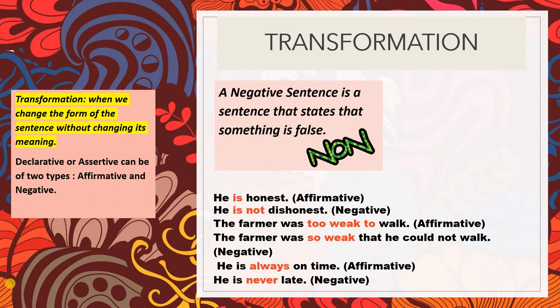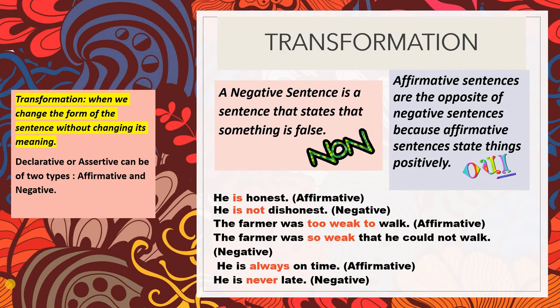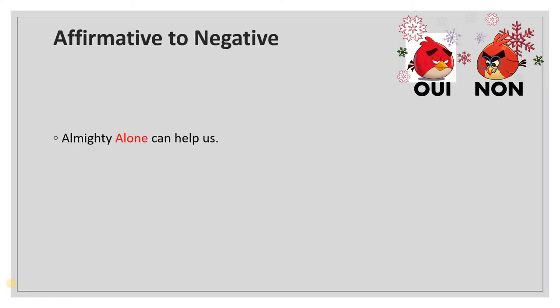A negative sentence is a sentence that states that something is false — something is not correct or not right. Affirmative sentences are the opposite of negative sentences because they state that things are positive. We should always use more affirmative, more positive words and positive sentence structures when we speak or write to people. Now let us look at the variety of ways in which affirmative and negative sentences are transformed.